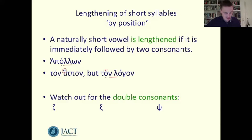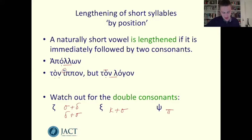In Greek there are three single letters which are actually double consonants. Look out for these: zeta is sigma plus delta or delta plus sigma; xi is kappa plus sigma; and psi is pi plus sigma. Therefore any vowel that is short by nature will be lengthened by position if it is followed by one of these. For example, the Greek word for six — hex — the epsilon is short by nature but it is long by position because it is really 'hex' with two consonants.